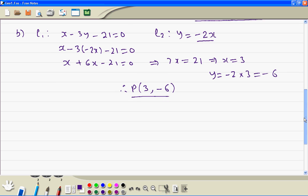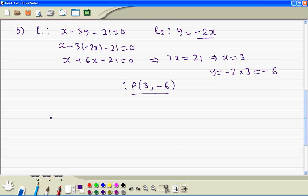Now we write L1. So x minus 3y minus 21 equal to 0. Make y the subject. So 3y is equal to x minus 21. So y is equal to plus one third x minus 7.